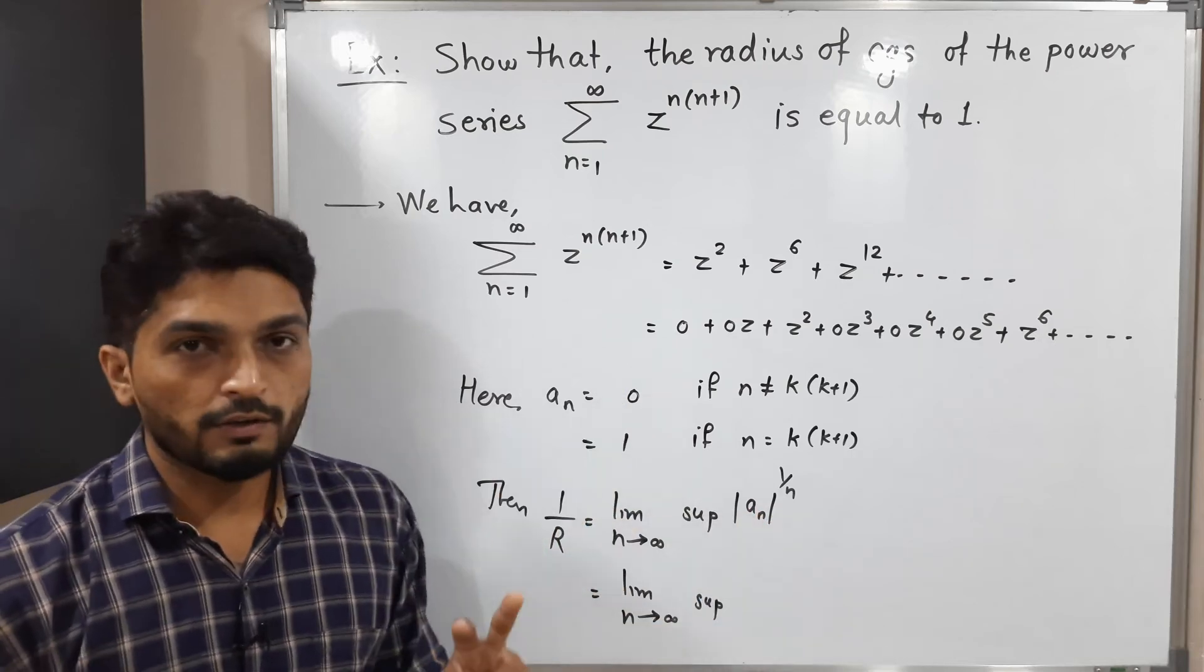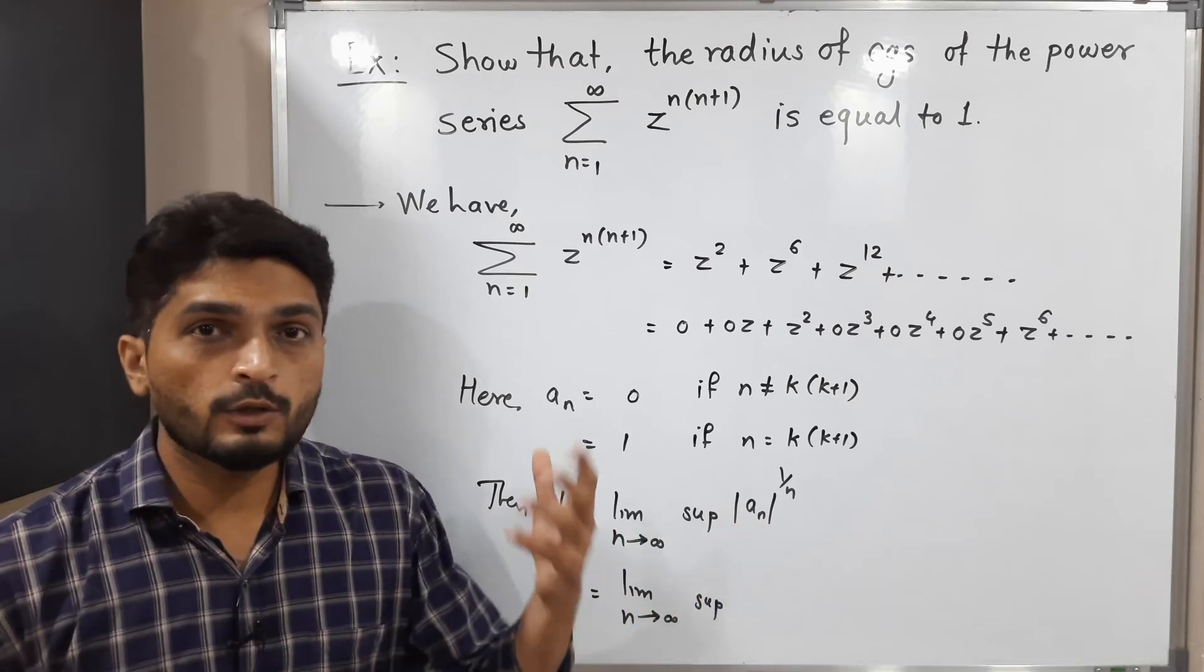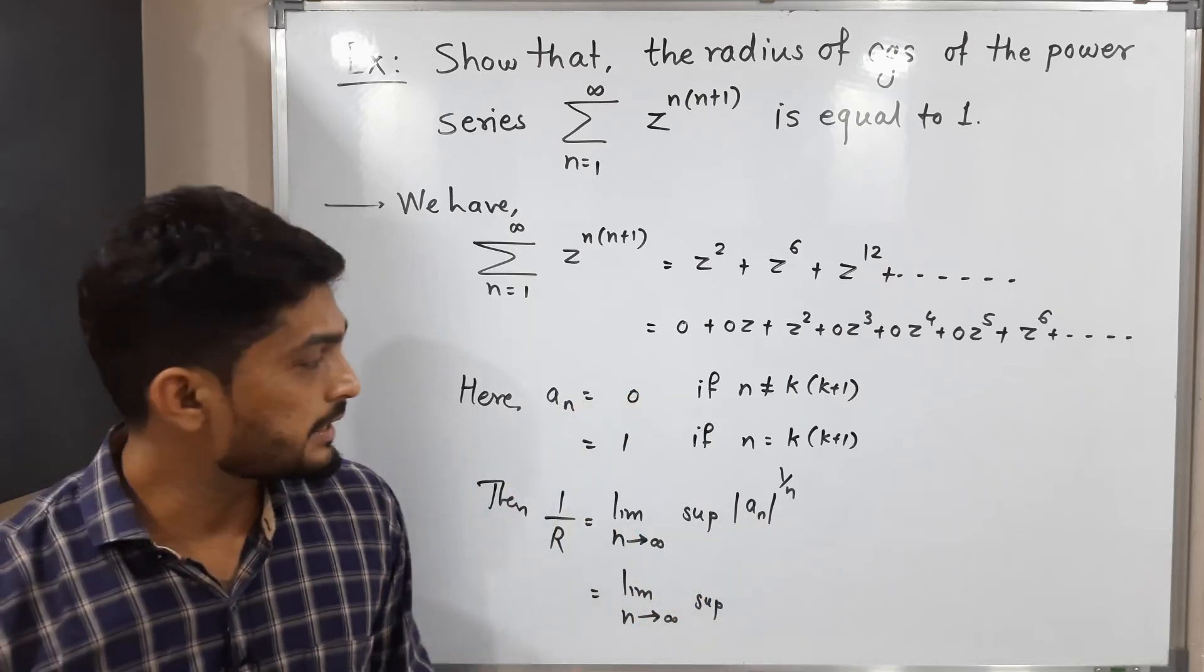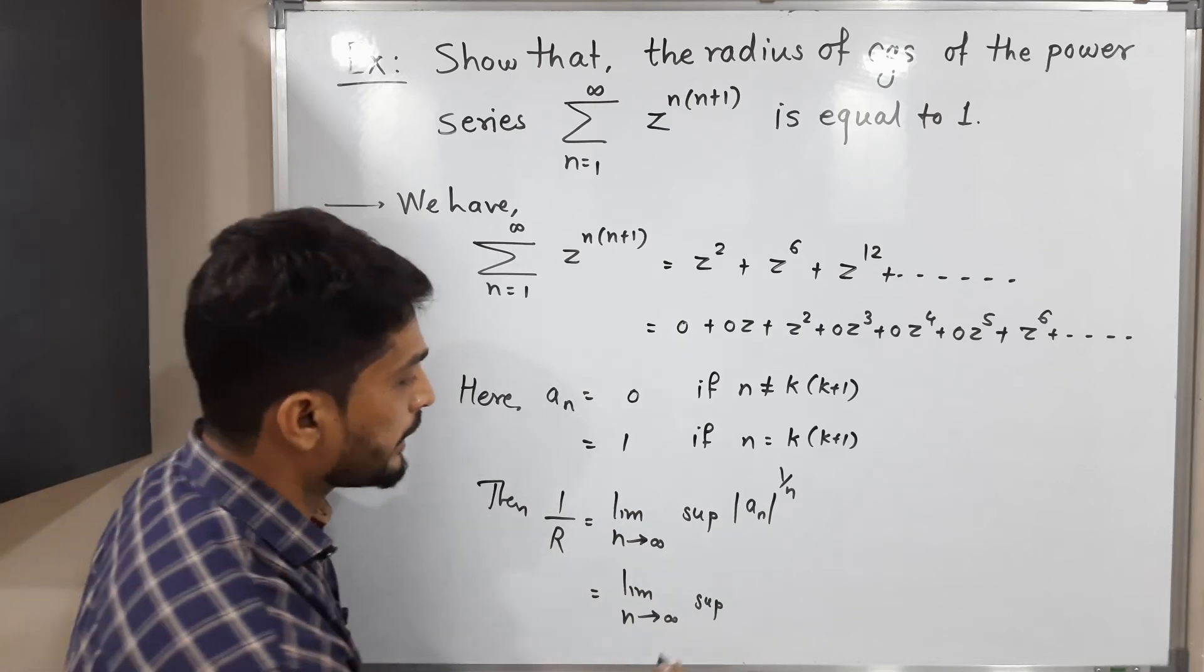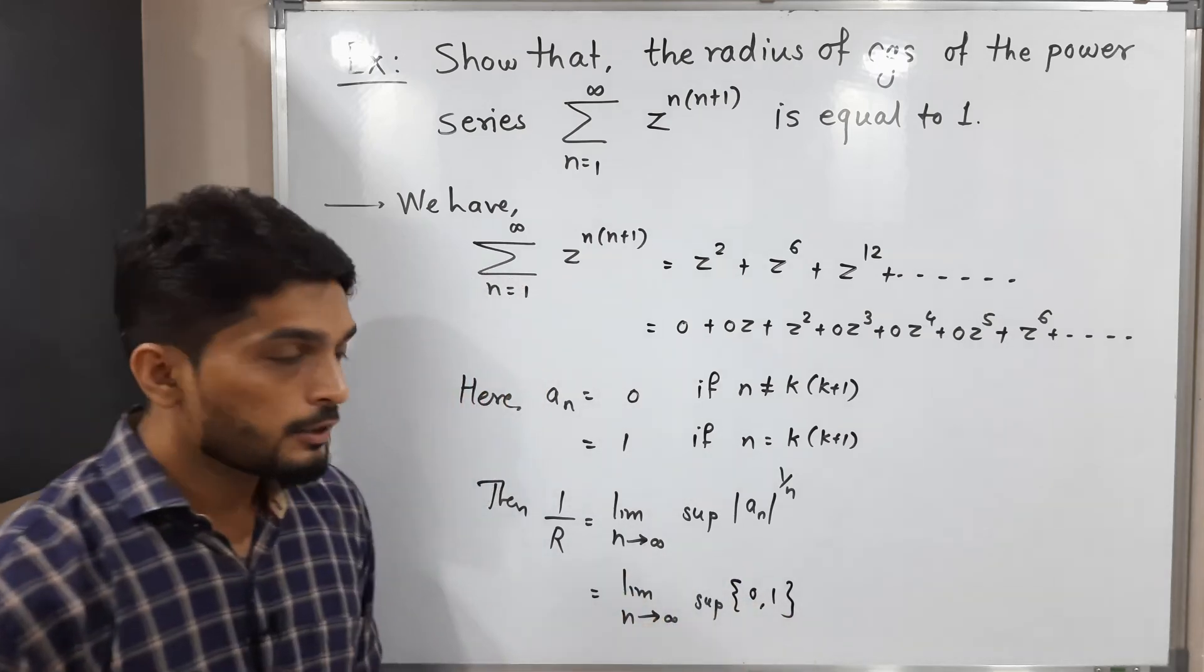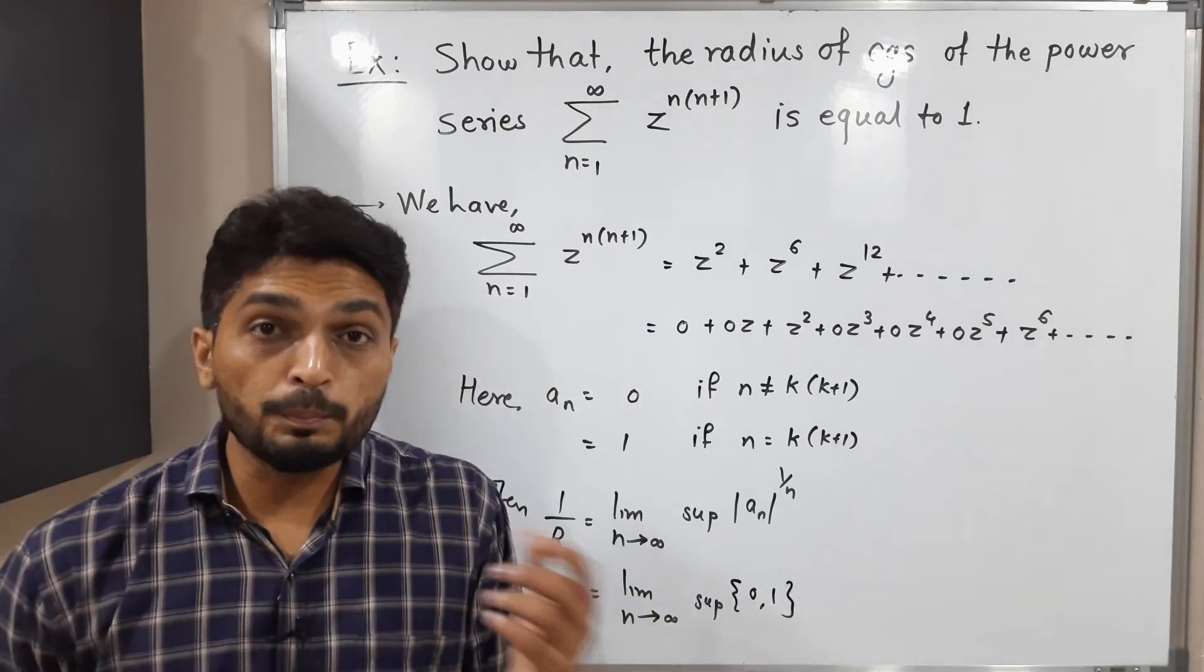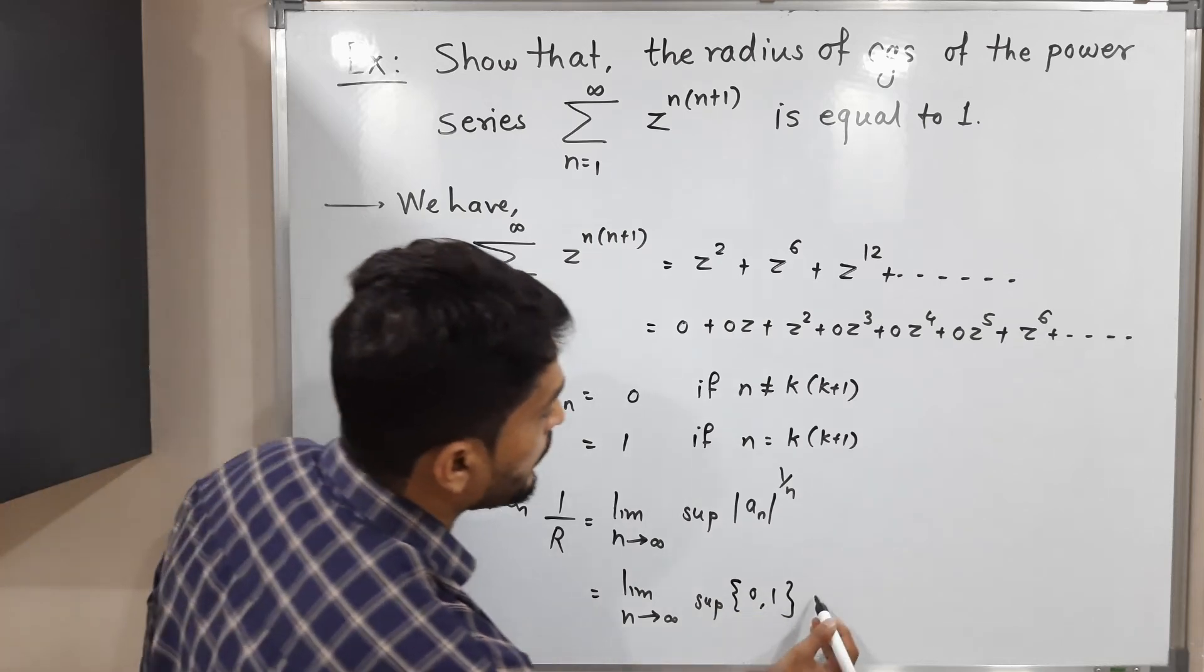But see, a_n has two different values: either it will be 0 or 1. So if you put 0, 0 raised to anything you will have 0 obviously. And if you put 1, 1 raised to 1/n again it will be 1. So that means we will have two different values: 0 and 1. We are interested to find its supremum value, maximum value. So obviously it is 1. So this is equal to 1.